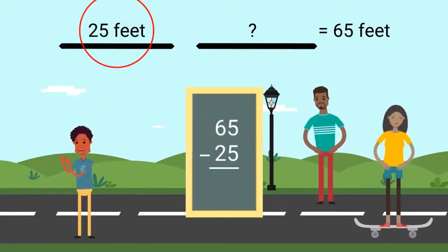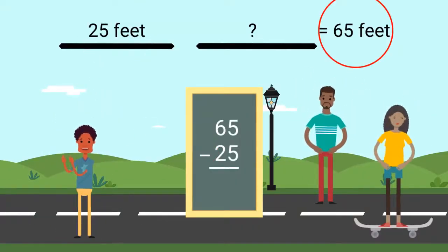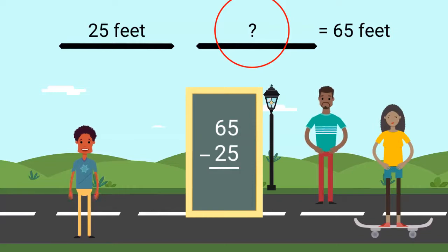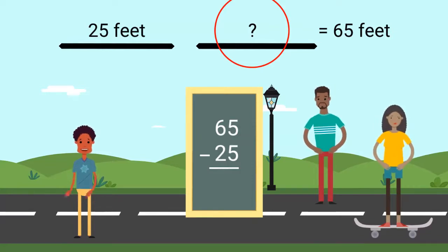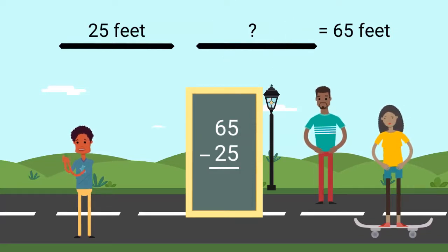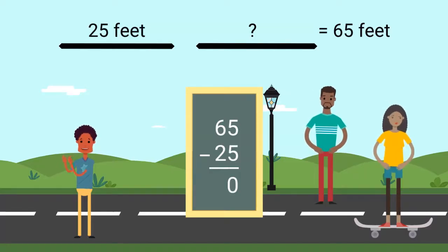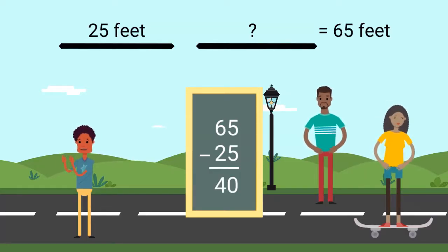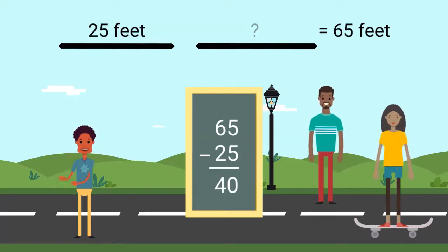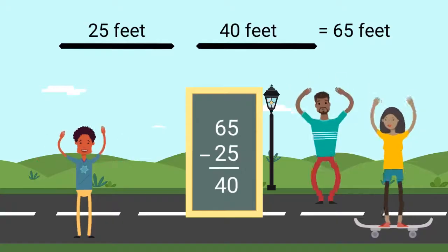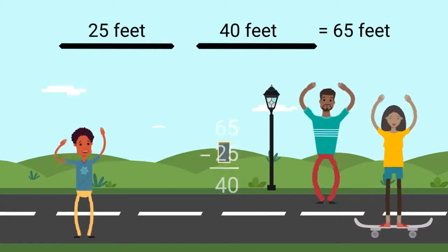We know the first number and we know the answer, but we don't know the second number. 5 minus 5 equals 0. 6 minus 2 equals 4. Carla rode 40 feet on her second try.